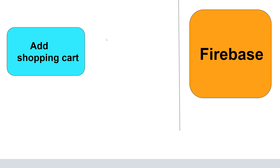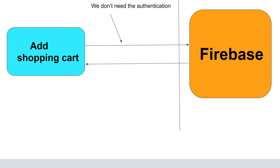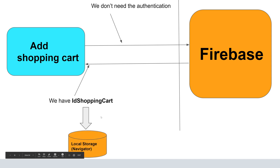Now we'll see the shopping cart. The big picture for shopping cart: when a person wants to add a course to the shopping cart, he will create the collection in Firebase shopping cart, and the user will receive the ID of the shopping cart. This ID we save in local storage, so each user has a shopping cart ID and we don't need to be authenticated.